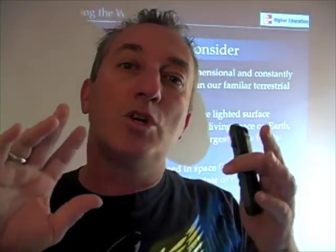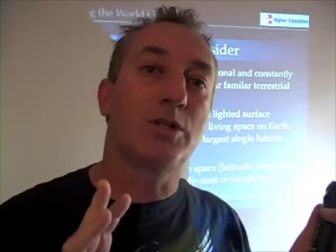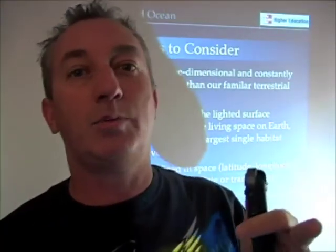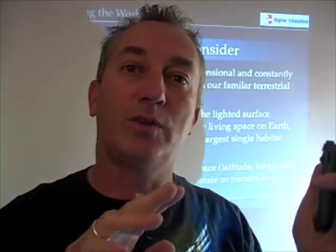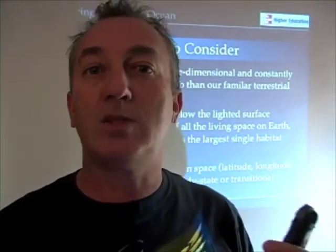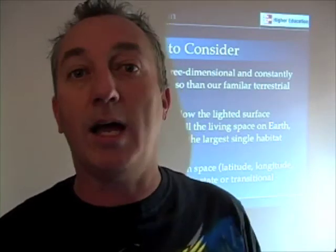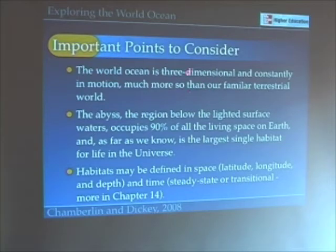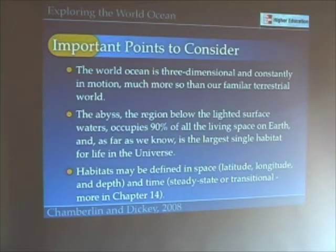In the ocean, we have to think about more subtle things like the temperature of the water, the salinity, the presence of light, the pressure, and how the water moves — all these different factors that contribute to a place where an organism may or may not be able to live. The ocean being three-dimensional and constantly in motion makes it a different kind of place to think about habitats than our familiar terrestrial world.